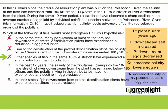Answer choice D says: In the past 12 years, the salinity of the tributaries flowing into the 10-mile stretch of river downstream from the plant has remained below 180 units, and the polar fish living in these tributaries have not experienced any decline in egg production. Does this strengthen the conclusion that high salinity lowers polar fish egg production? Yes. The argument tells us there is low egg production in the presence of high salinity, and this answer choice tells us egg production is stable where there is no high salinity — this certainly strengthens the causal relationship. We'll keep it.